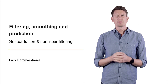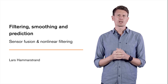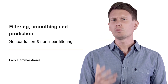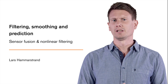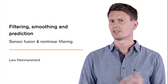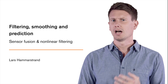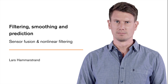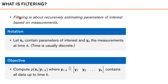To start off, I thought we put it all in a bit of context. What do we mean by filtering, and how does it connect to the related estimation problems of smoothing and prediction? Filtering is about recursively — which usually means at each time instance — estimating parameters of interest based on measurements.